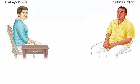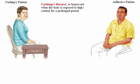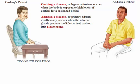One way that scientists learn about the endocrine system is to observe the symptoms of patients who secrete too much or too little of a particular hormone. Two relatively rare diseases of the adrenal gland help illustrate some of the functions of cortisol. Cushing's disease, or hypercortisolism, occurs when the body is exposed to high levels of cortisol for a prolonged period. Addison's disease, or primary adrenal insufficiency, occurs when the adrenal glands produce too little cortisol and too little aldosterone.